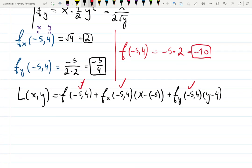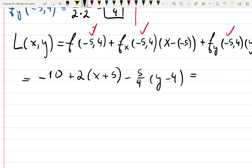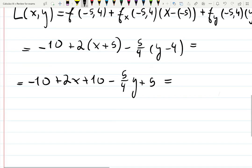Done. So it's going to be -10 plus 2(x + 5) minus 5 quarters (y - 4). If you simplify it, which means distribute all the twos: 2x plus 10, and -5 quarters, collect 5 quarters times 4 is just 5. Minus minus gives you plus.